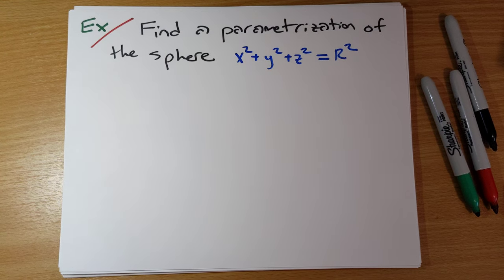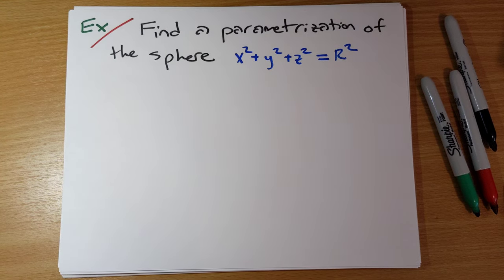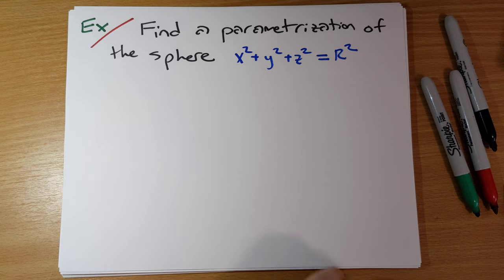Here's another classic example. We're going to find the parameterization of the sphere x squared plus y squared plus z squared is equal to R squared.